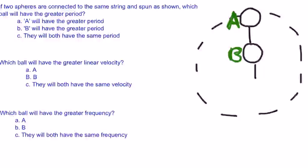Which ball will have the greater linear velocity? The answer is A, the outer ball will have the greater linear velocity because it's moving a greater distance, but in the same amount of time.